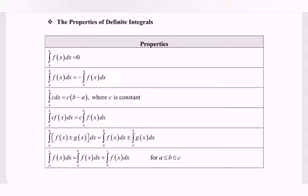Here we have the properties of the definite integral. Kindly refer to the properties. The first one: integrate the function f(x) with respect to x and we will obtain zero if the limit is from a to a.